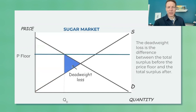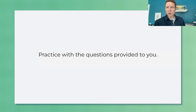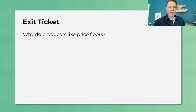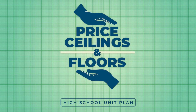Deadweight loss is this triangle — all the transactions that would have taken place in the free market that no longer take place. Then students get interactive practice graphing surplus changes, questions in their student activity sheet, and an exit ticket to test their knowledge and foreshadow the next day: why do producers like price floors? It's a guaranteed higher price, so their surplus can go up. That's day two.